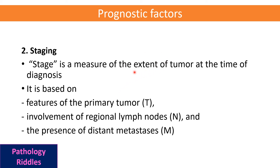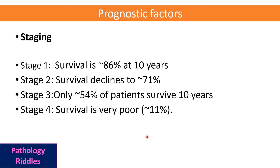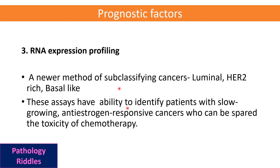Staging is a measure of the extent of tumor at the time of diagnosis. The most popular is TNM staging: T for size of the primary tumor, N for involvement of regional lymph nodes, and M for distant metastasis. Stage 1 survival is around 86 percent after 10 years; stage 2 declines to 71 percent; stage 3 is 54 percent; stage 4 is only 11 percent after 10 years.